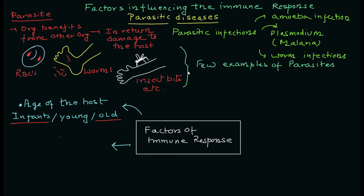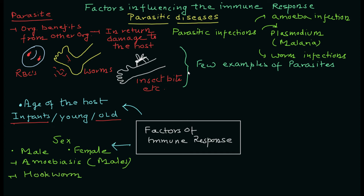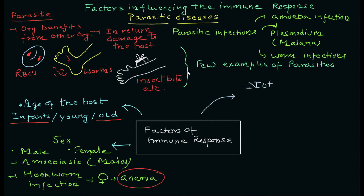The second factor is sex or gender, which can also contribute to susceptibility to parasitic infection and the immune response against it. Males and females show variability in the pathogenesis of infection. For example, amoebiasis is more common in males, while in hookworm infection, females specifically have a tendency to develop anemia.